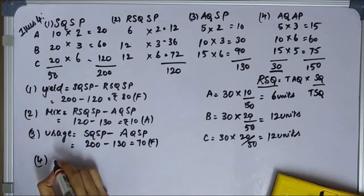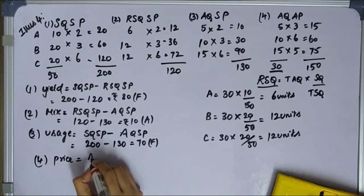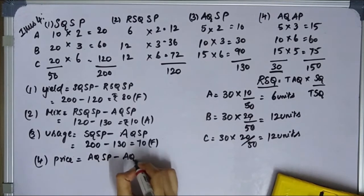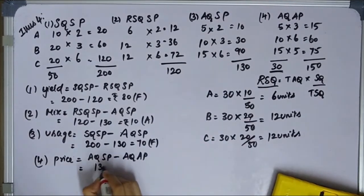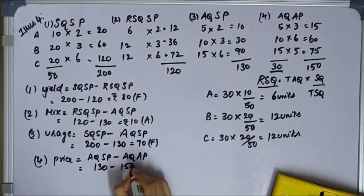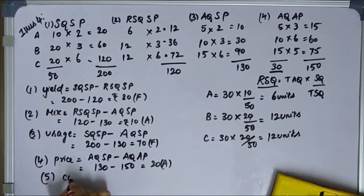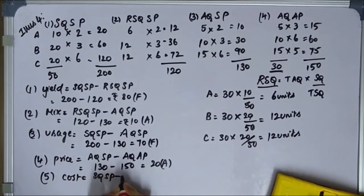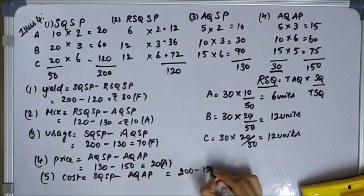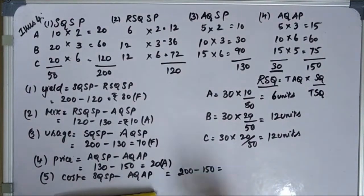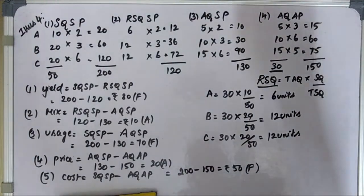Material price variance = AQSP minus AQAP = 130 minus 150 = 20 rupees adverse. Material cost variance = SQSP minus AQAP = 200 minus 150 = 50 rupees favorable. This completes Illustration 4.